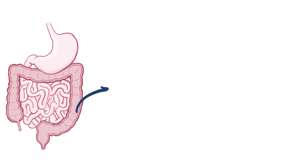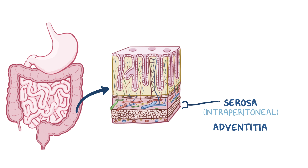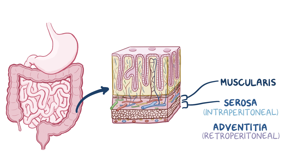The walls of the gastrointestinal tract are composed of four layers. The outermost layer is called the serosa for the intraperitoneal parts and the adventitia for the retroperitoneal parts. Next is the muscular layer, which contracts to move food through the bowel. After that is the submucosa, which consists of a dense layer of tissue that contains blood vessels, lymphatics, and nerves.